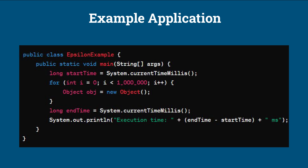Let's consider a simple Java application that creates a large number of objects in a loop but does not perform any explicit memory management or garbage collection. Running this application with the Epsilon garbage collector enabled will demonstrate that the application runs without any garbage collection overhead, as the Epsilon collector does not reclaim memory.